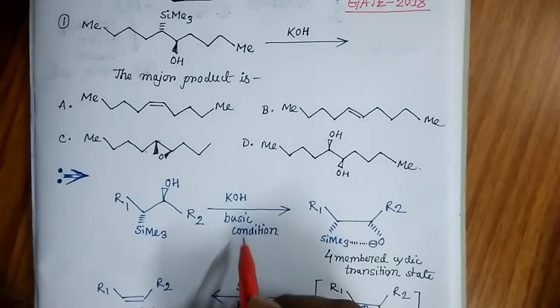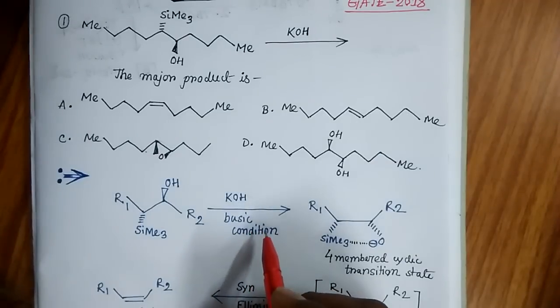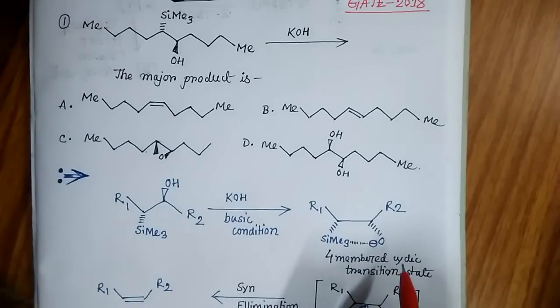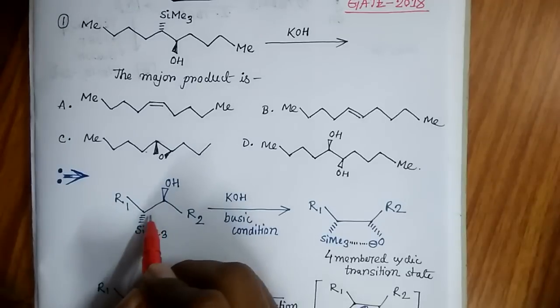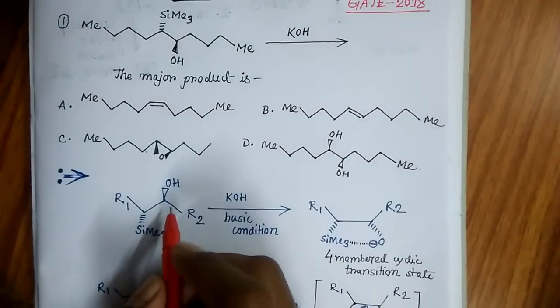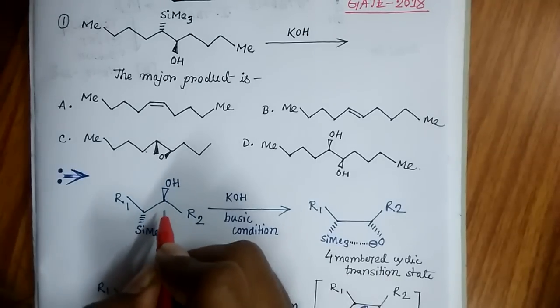Here this can be written as R1 and this group can be written as R2 for simplification. When it is treated with potassium hydroxide, which is a basic condition, you have to remember that in basic condition there will be formation of a four-membered cyclic transition state. For formation of this cyclic transition state, the two groups must be placed on the same side.